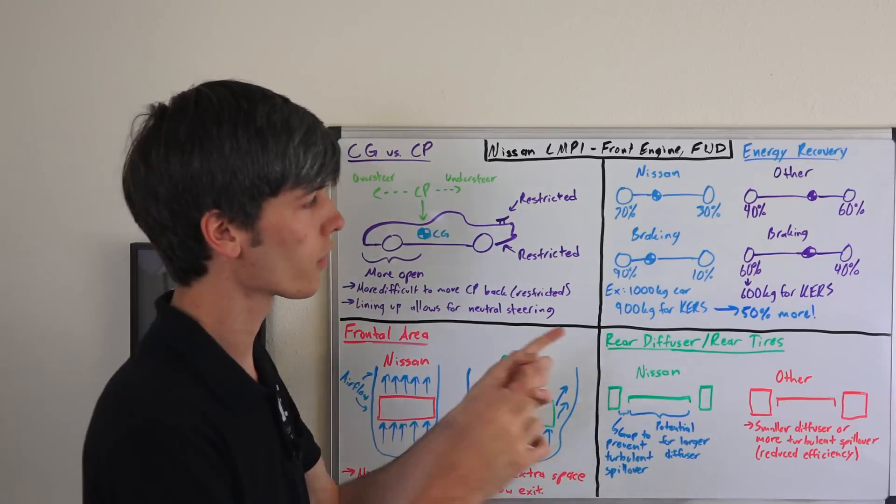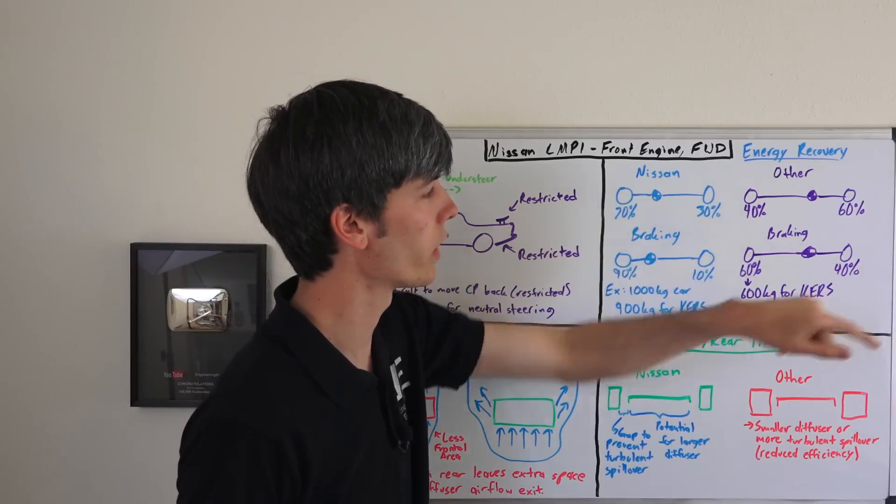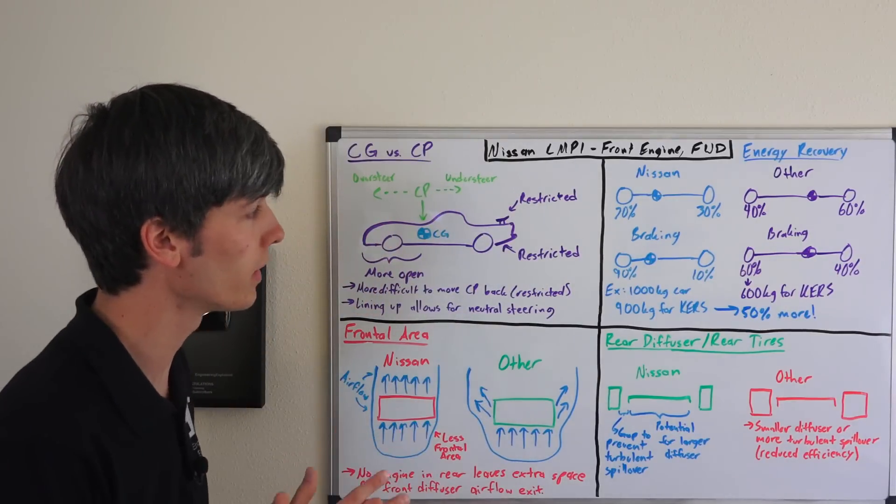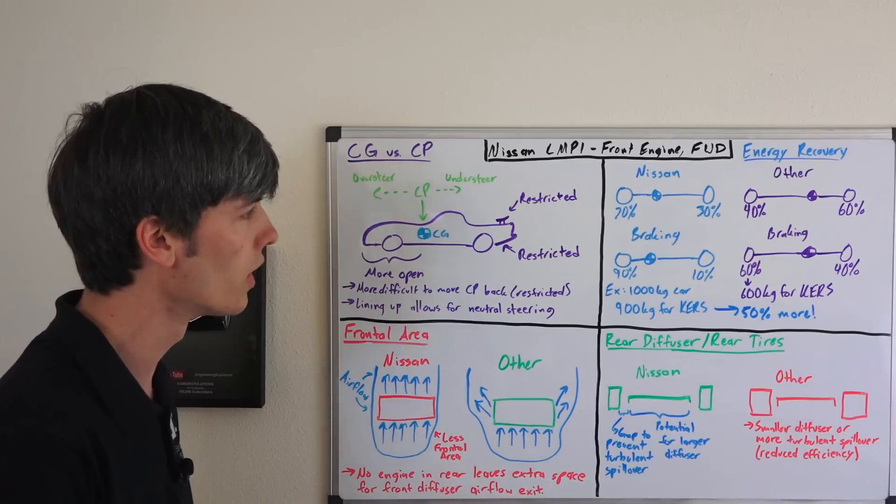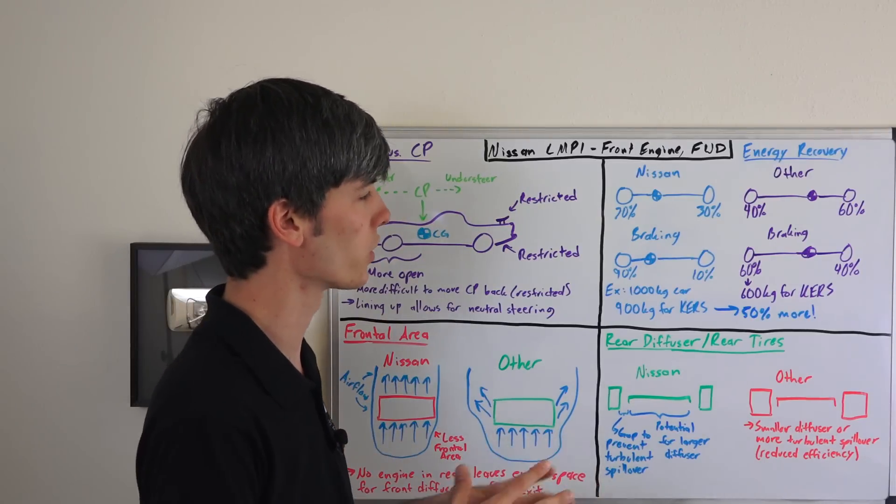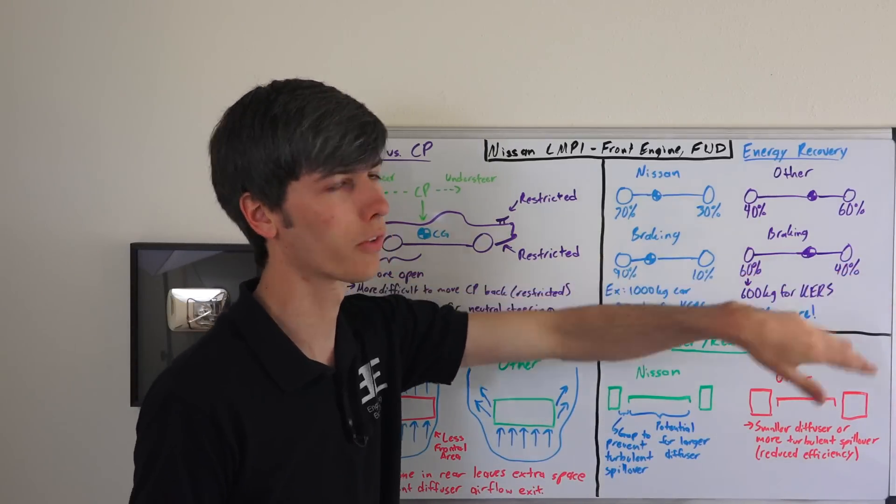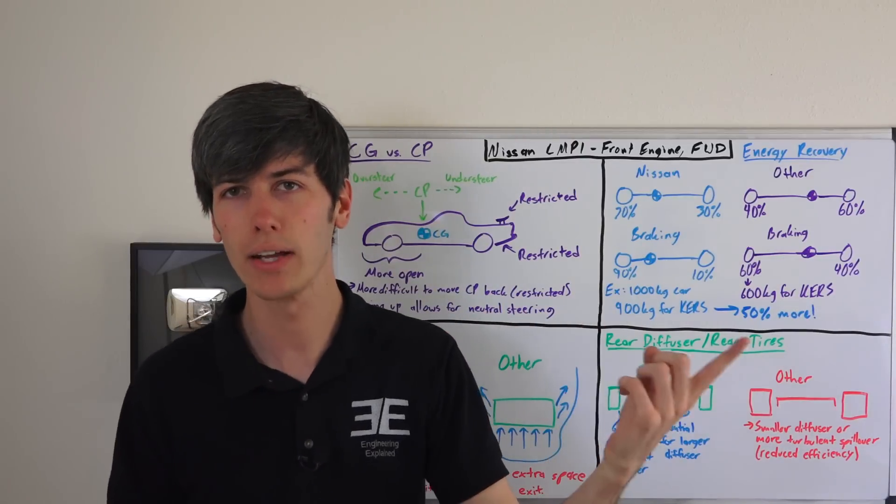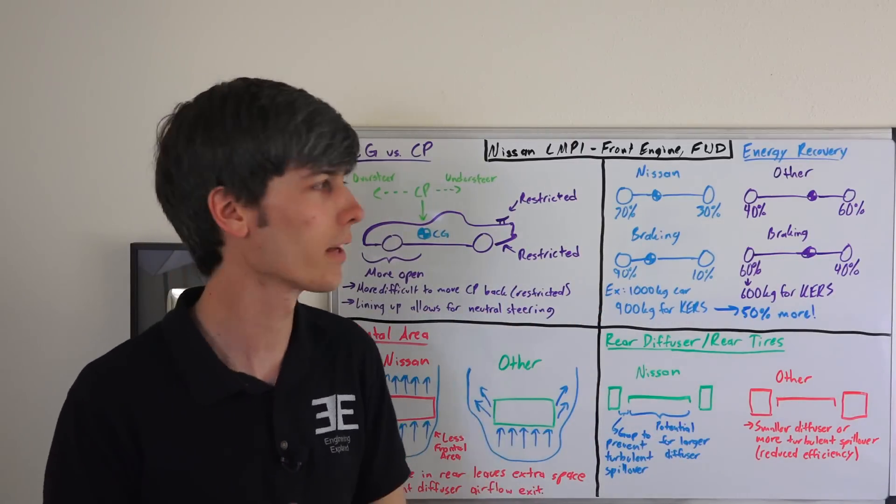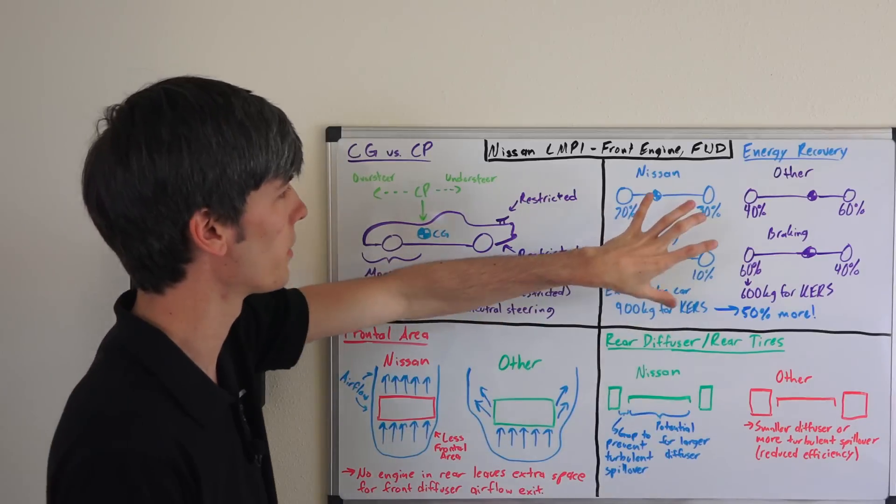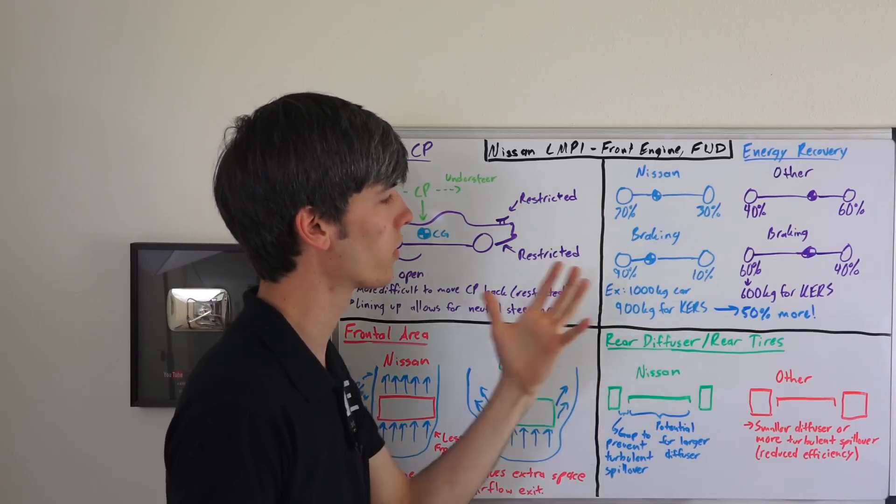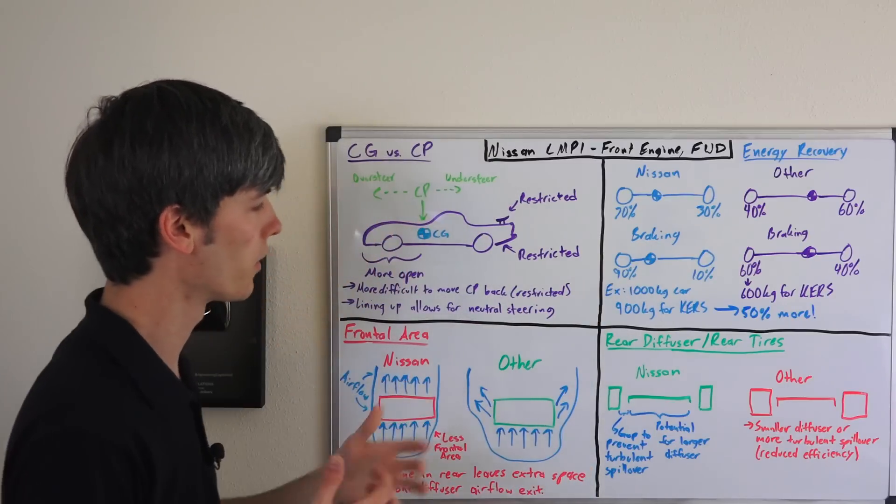Now yes, the other team could recover energy from both axles, but speaking with Nissan, they said no one currently did this. They just did it from one axle, and there's some strange restrictions around that. But basically, if you do recover from both axles, you're going to be adding weight to your vehicle, and you're going to be adding complexity. Neither of those are desirable, so basically, this comes out as a big advantage for Nissan, because they're able to recover more energy under braking.